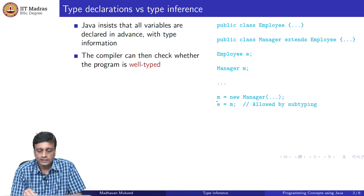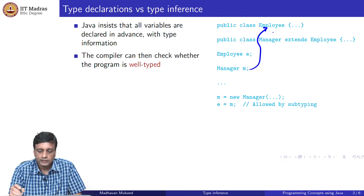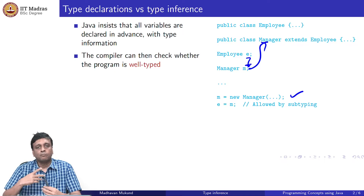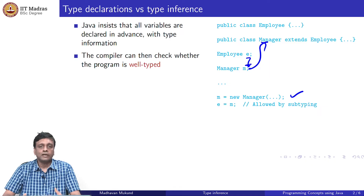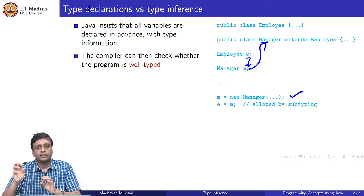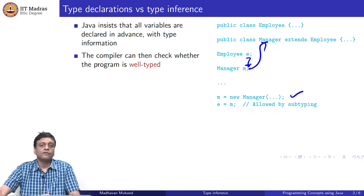Now if I write something which seemingly looks mistyped — for example, if I assign m to be a manager, which is fine, and then allow e to point to m — it looks like I am taking an employee variable and pointing it at a different type. But because we know that manager extends employee by the subtyping relation, every time I want to see an employee, I am willing to take a manager. So this is allowed.